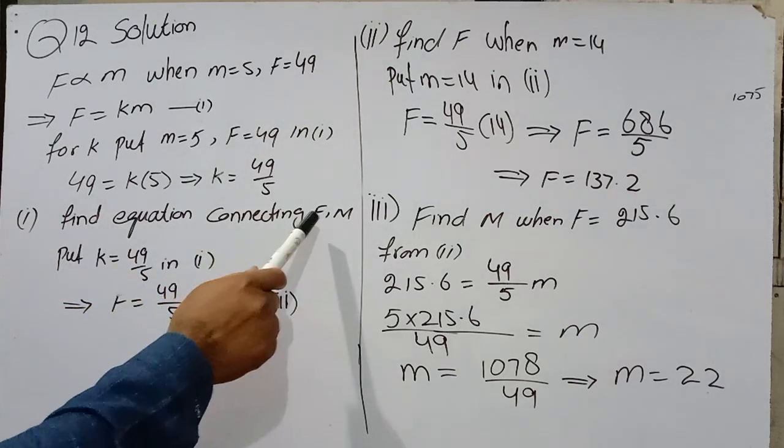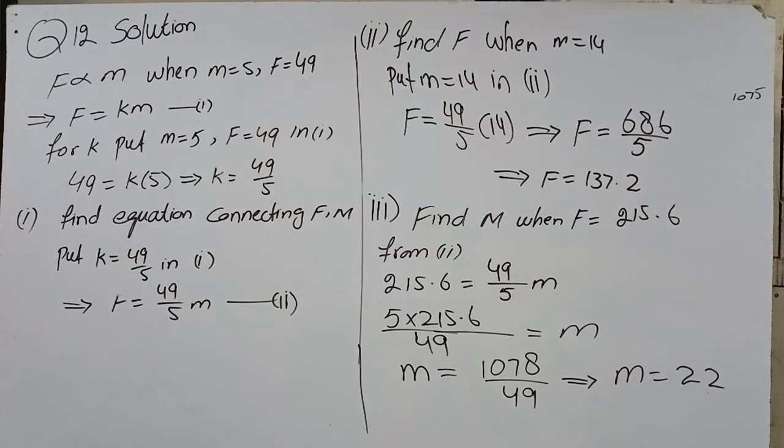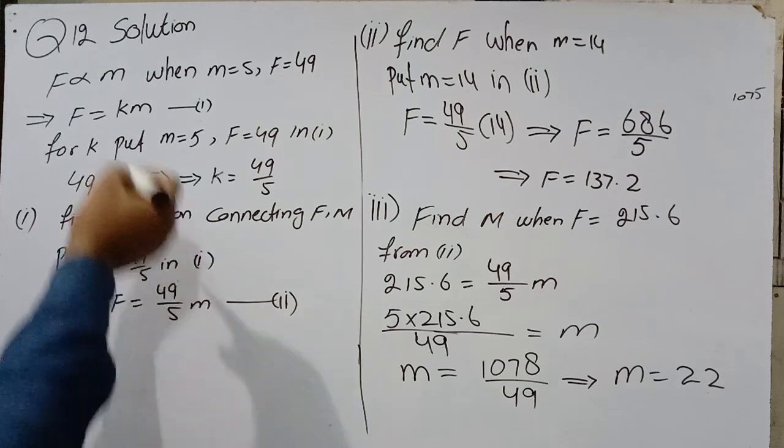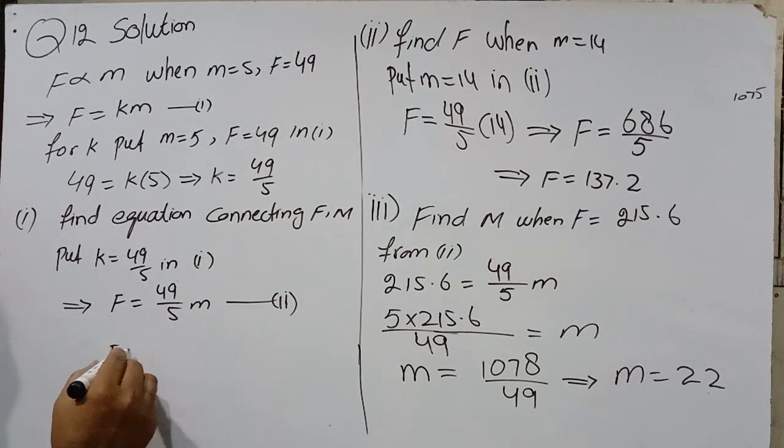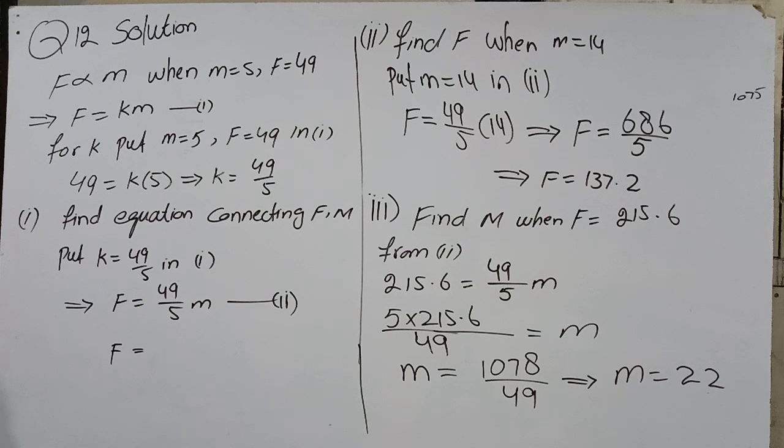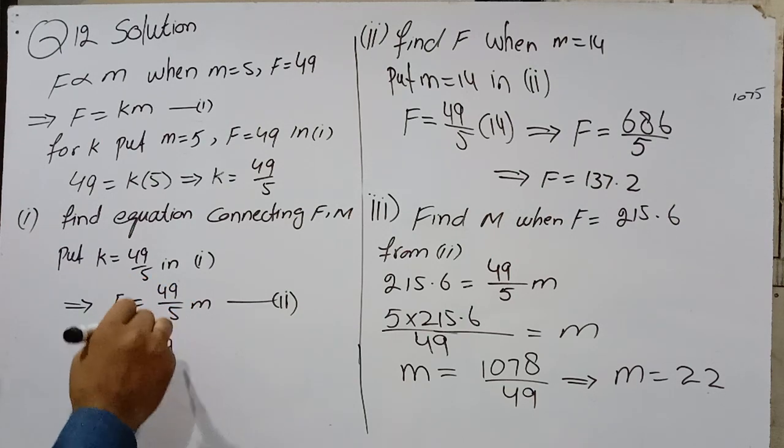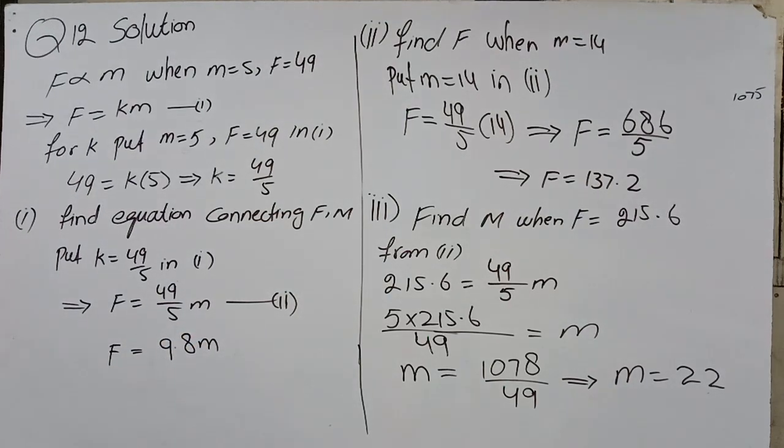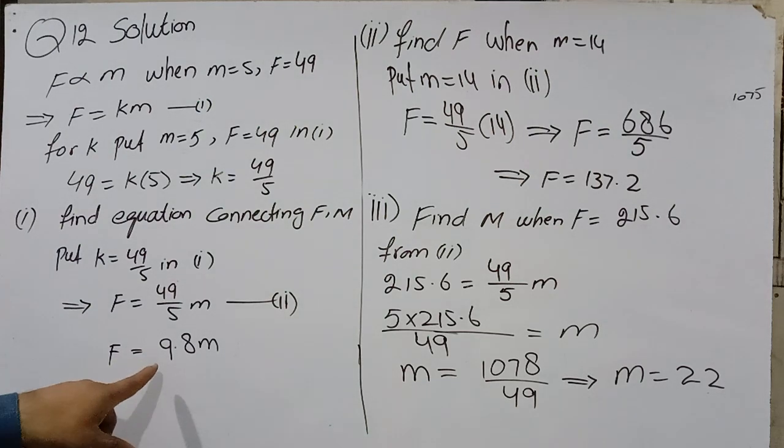Part 1: Find equation connecting F and M. Put K = 49/5 in equation 1. F = (49/5)M. If we divide: 5 into 49, 9 times 5 is 45, remaining 4, point 8. F = 9.8M. This is equation number 2. The equation connecting F and M is F = 9.8M.